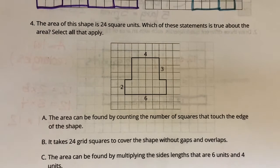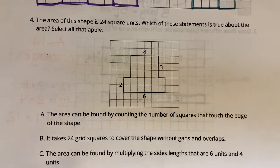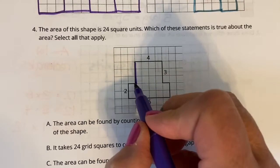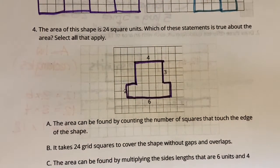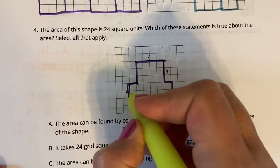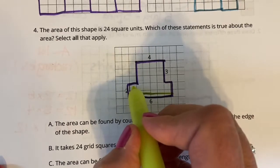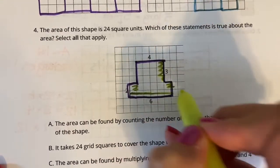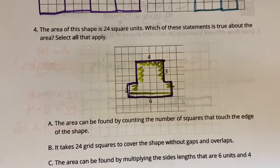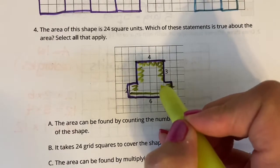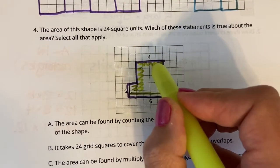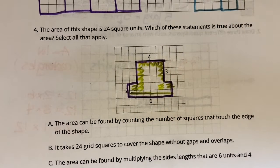This one says the area of the shape is 24 square units — which of these statements is true? First: the area could be found by counting the number of squares that touch the edge of the shape. If I count only the edge-touching squares, I get 18 squares — not 24. So that one does not work.